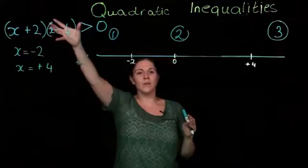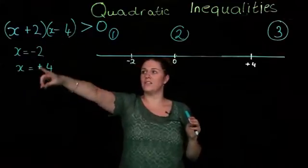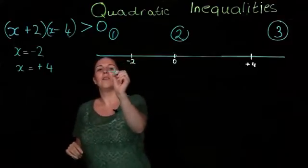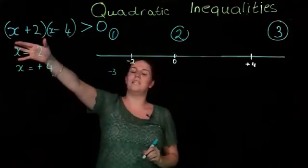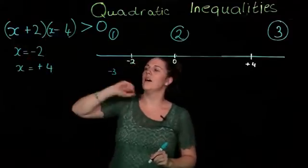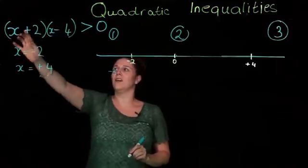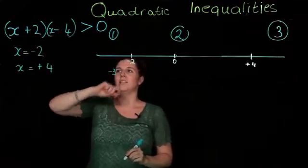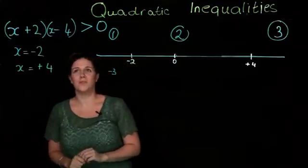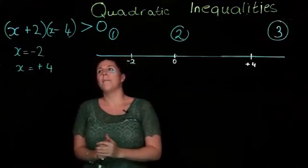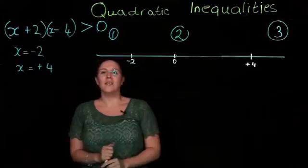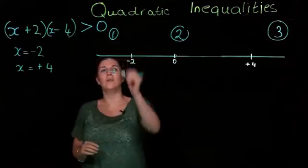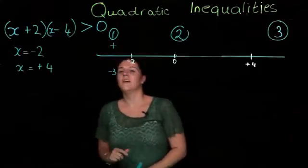Let's test minus 3. If we put minus 3 into this factorization, we'll end up with minus 3 plus 2, which is minus 1, and minus 3 minus 4, which is minus 7. Minus 1 times minus 7 is plus 7, which is greater than 0. This is positive, and it does work.